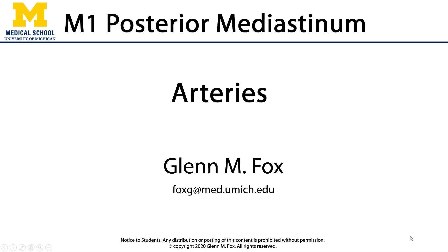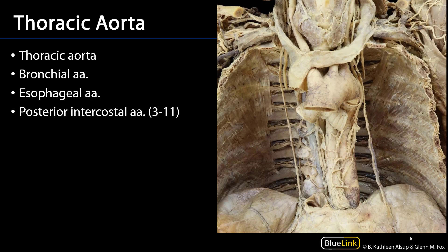Let's talk about the arteries of the posterior mediastinum. Our story's protagonist is going to be the thoracic aorta, which has three parts: the ascending aorta, the arch of aorta, and the thoracic part of the descending aorta. That thoracic part of the descending aorta is more often than not referred to as the thoracic aorta, which can sometimes be a little confusing.